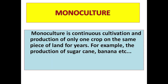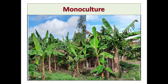Cropping systems are the different ways of growing crops. Monoculture is the continuous cultivation and production of only one crop on the same piece of land for years — for example, the production of sugarcane, banana, etc. The prefix 'mono' means one, so one crop is grown on the land every year. These are normally permanent crops.